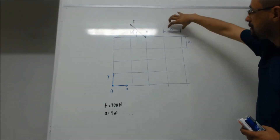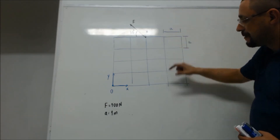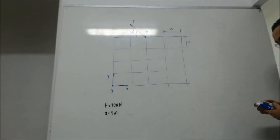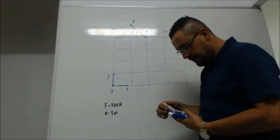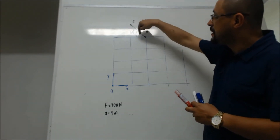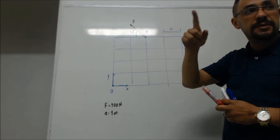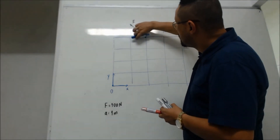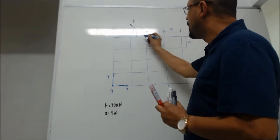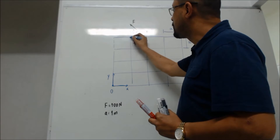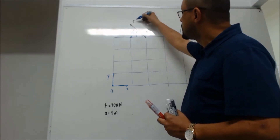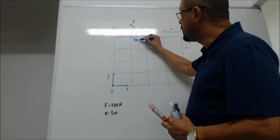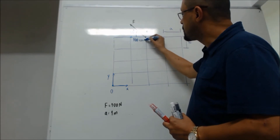Cada quadradinho desse vale 1 por 1. Então, o que a gente vai fazer aqui? Primeira coisa, vamos pegar essa força aqui e trabalhar horizontal e vertical. Então, projeta. Projetou o cosseno. Aqui vai ficar o cosseno de 100, que é a força, vezes o cosseno de 30. 100 vezes o cosseno de 30.